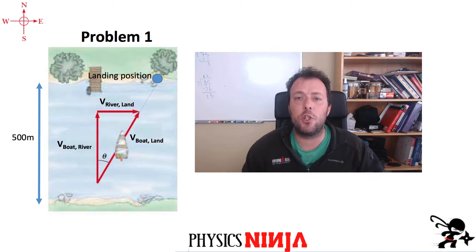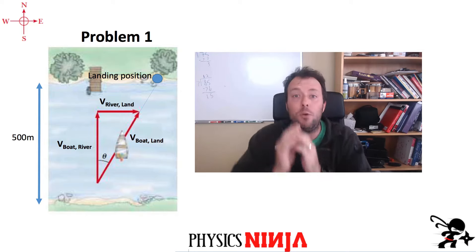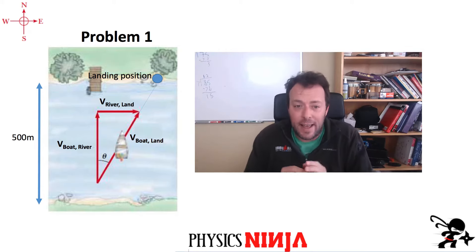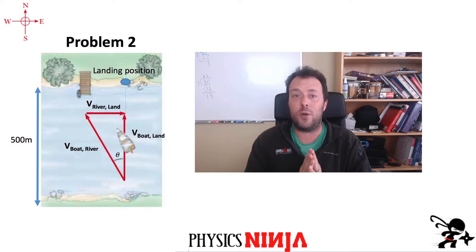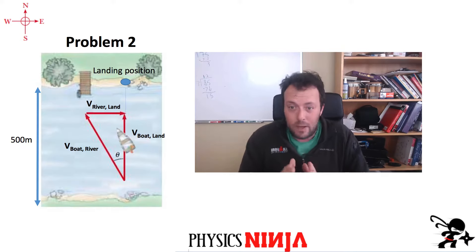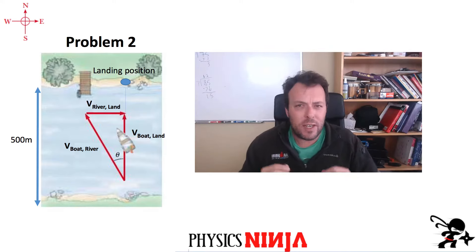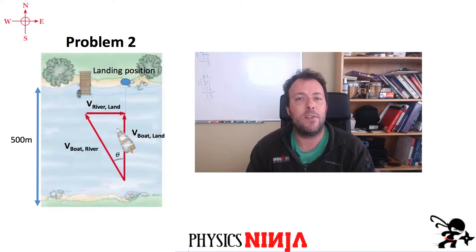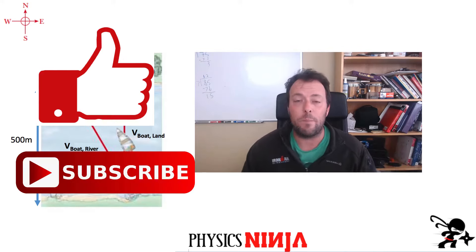Hi everybody, Physics Ninja. Today I want to look at two boat river crossing problems. In the first one, I'm pointing my boat directly across the river, but there is water flowing at a certain speed. The first question is how far am I going to drift downstream as I cross this river? In the second problem, I don't want any drift — I want to land exactly across from where I started. So you've got to set up the problem slightly differently.